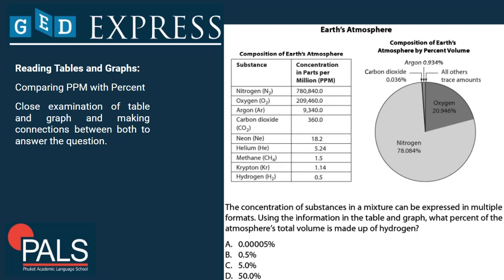Let's have a look at what we see here. We see a table showing the composition of Earth's atmosphere — the different gases: nitrogen, oxygen, argon, carbon dioxide, neon, helium, methane, krypton, and hydrogen. On the right side we have a pie chart showing the composition of Earth's atmosphere by percent volume, with nitrogen, oxygen, argon, carbon dioxide, and all other trace amounts. Let's have a look at the question.